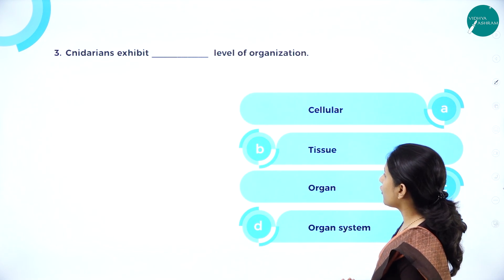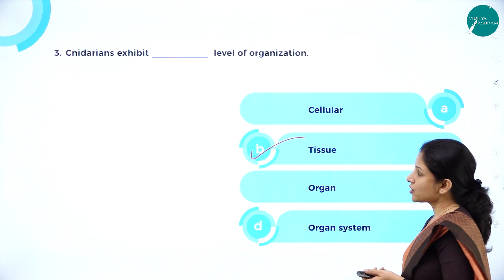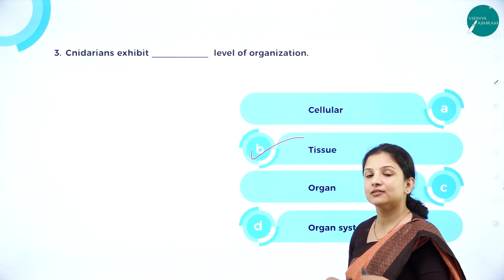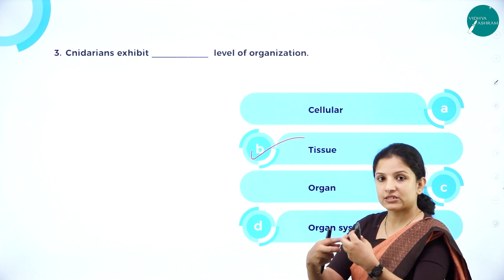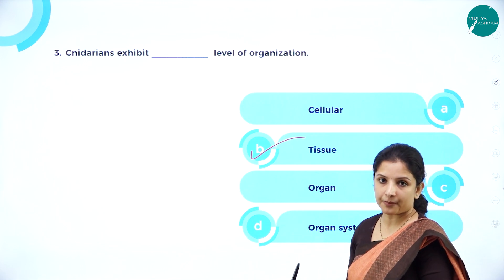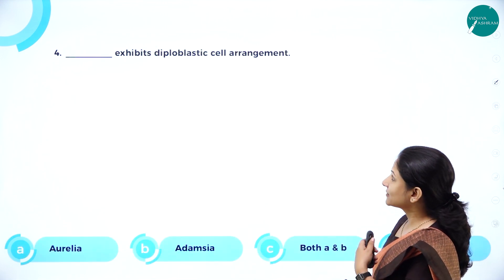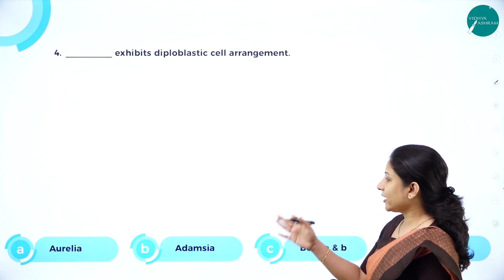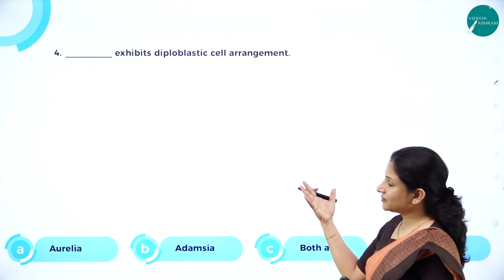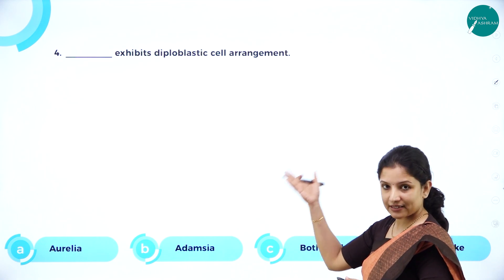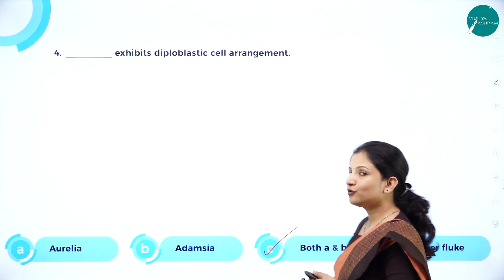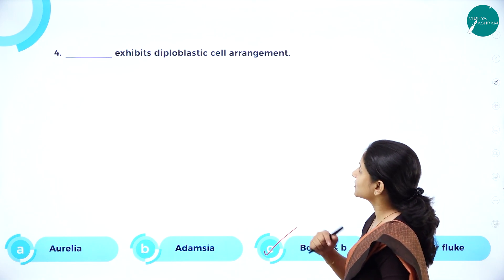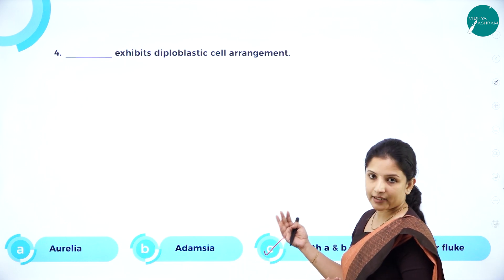Next: Cnidarians exhibit dash level of organization — the answer is tissue level of organization. Tentacles bearing stinging capsules are a group of cells coming together to form a tissue performing a particular function, which is capturing prey. Next: Dash exhibits diploblastic cell arrangement — is it Aurelia, Adamsia, both A and B, or liver fluke? Aurelia is jellyfish and Adamsia is sea anemone — both belong to Coelenterata. So the answer is both A and B. Liver fluke comes under flatworms (Platyhelminthes) and has triploblastic cell arrangement.